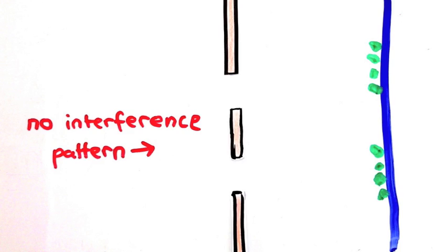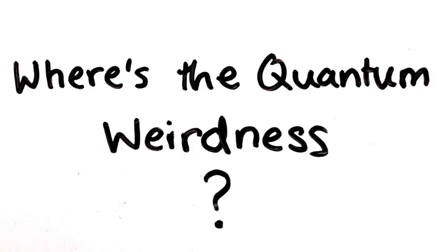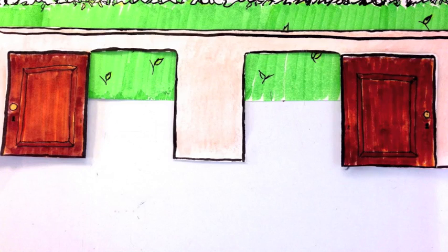This explains one of the big questions about quantum mechanics. Why don't we see quantum weirdness all the time? Why don't I see an interference pattern when I throw apples and don't watch which door they go through?